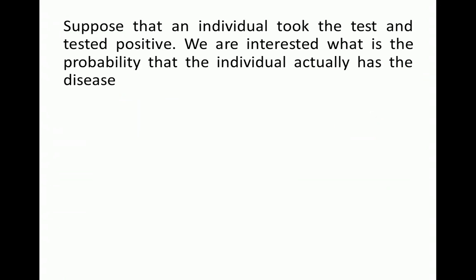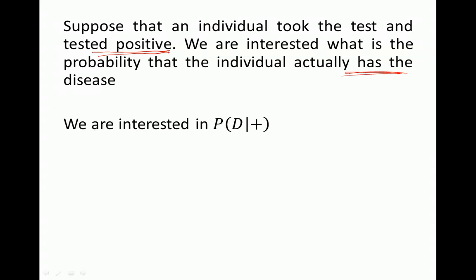Suppose an individual took the test and tested positive, but we don't know if they actually have the disease. We just know the test gave a positive response. So we're interested in the probability that the individual actually has the disease — that is, the conditional probability of disease given a positive test result.